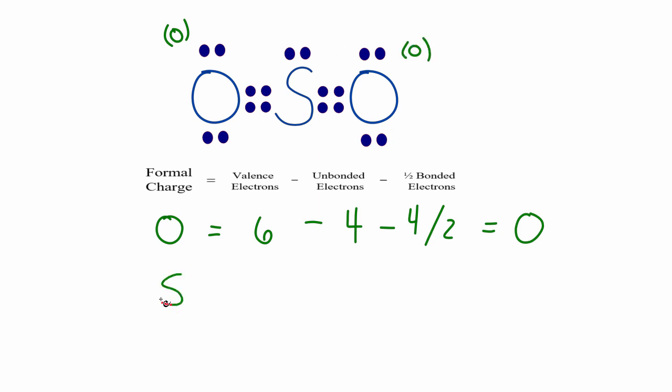Let's try the sulfur in the center. Sulfur, six valence electrons, minus unbonded, two, minus bonded, two, four, six, eight, divided by two. And that gives us 6 - 2 - 8/2 = 0. So the formal charge here is zero.